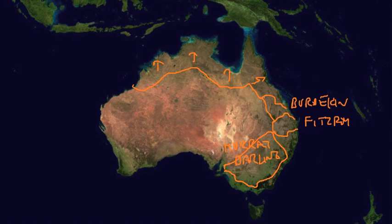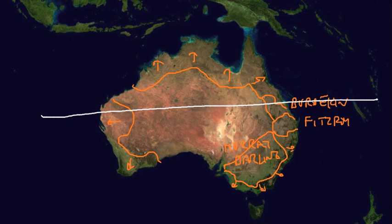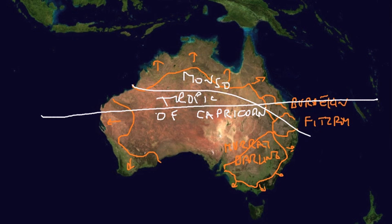These coastal catchments are pretty ephemeral and dry up in many cases, depending on whether it's the monsoonal or other climate regime. This is the Tropic of Capricorn, and to the north we have very much a monsoonal rains that occur. These are monsoons, which are summer rains, versus to the south we have winter rains and a Mediterranean climate.